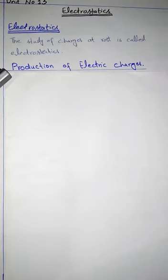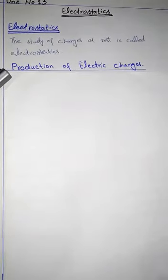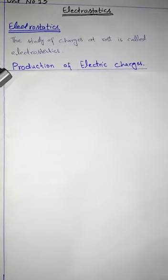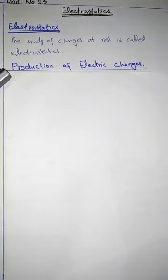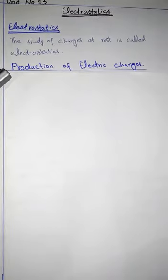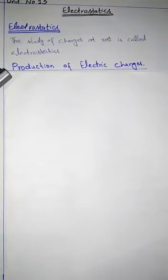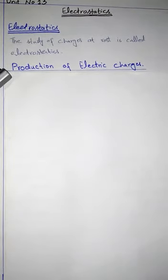If we run a plastic comb through our hair and bring it near small pieces of paper, the comb attracts them. Similarly, amber when rubbed with silk attracts small pieces of paper. This property of attraction or repulsion between substances is due to the electrical charges they acquired during rubbing.